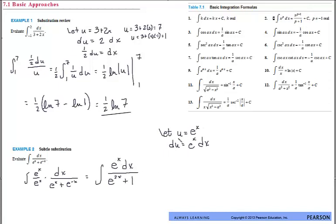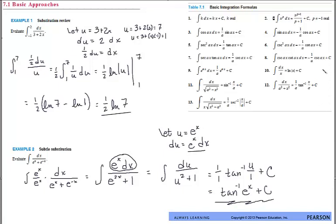After doing that computation and letting u equal e to the x, e to the x is pretty cute because its derivative is just itself. I've got this e to the x dx here, so I'm going to replace all of this with du. I'll have integral of du over u squared plus 1. That looks like this guy right here, number 12, where my a is 1. With my a being 1 and doing my back substitution, there's what I end up with.